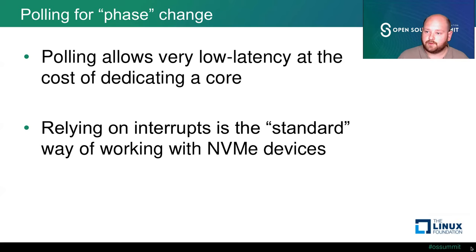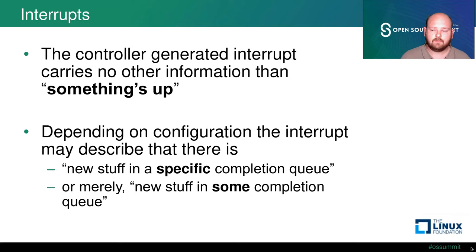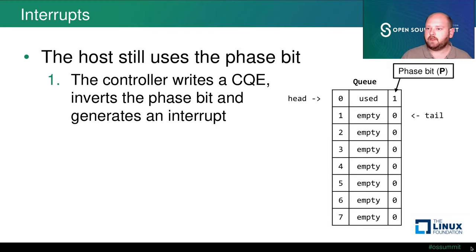While polling allows very low latency, it usually comes at the cost of dedicating an entire core to constantly doing this. Another way is to rely on interrupts, which is the standard way of working with NVMe devices. In an interrupt-based system, the controller generates an interrupt indicating something needs action. Depending on device capabilities, the interrupt may indicate new entries in a specific completion queue or just some completion queue. We still use the phase bit after receiving an interrupt, because we don't know how many entries the queue holds — we keep reading until we see the phase bit change again.